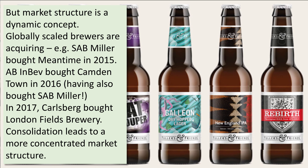Market structure is a dynamic concept. The big global multinational breweries are already starting to acquire craft beer makers: SAB Miller bought Meantime in 2015, AB InBev bought Camden Town in 2016 and also acquired SAB Miller to create a mega beer-making firm, and in 2017 Carlsberg bought the London Fields brewery. As big players snap up craft beer makers, this tends towards a more concentrated market structure — a key example of market dynamics to mention in evaluation.